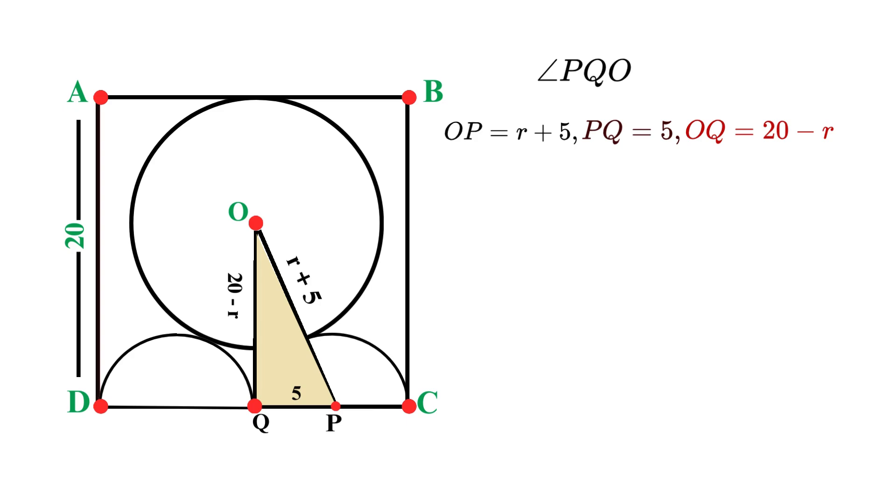Now here, we use the Pythagorean theorem. For the right triangle PQO, the Pythagorean theorem states that the square of the hypotenuse equals the sum of the squares of the two legs. So we can write it as OP squared equals PQ squared plus OQ squared. Now let's substitute our known values. We have OP, which is r plus 5, PQ, which equals 5, and OQ, that is 20 minus r. So by putting the values, our equation becomes (r + 5)² = 5² + (20 - r)².